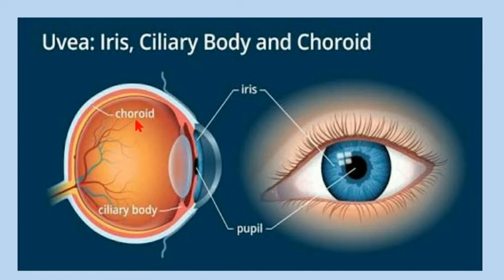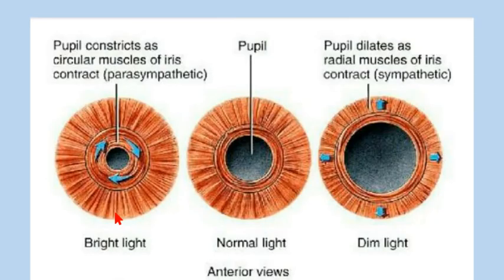The choroid has many blood vessels that provide nutrients to the eye. Inside the choroid is the retina, which contains photoreceptor cells. The pupil is in the center of the iris, and the iris is made up of circular muscles and radial muscles.